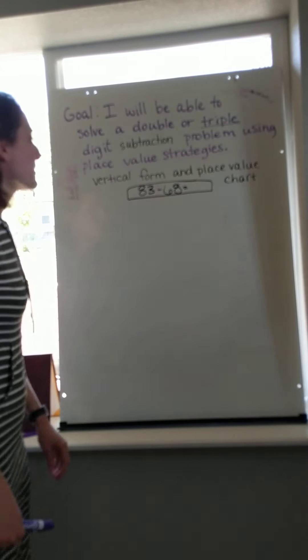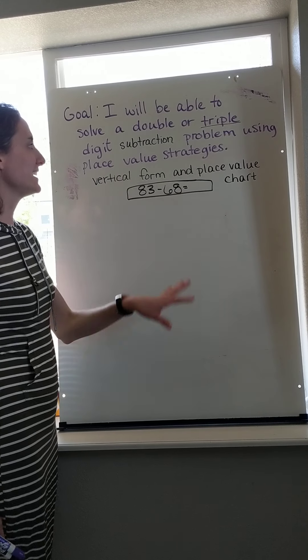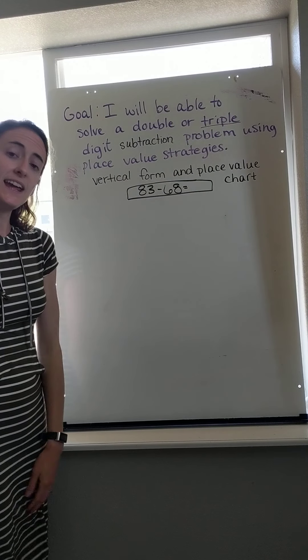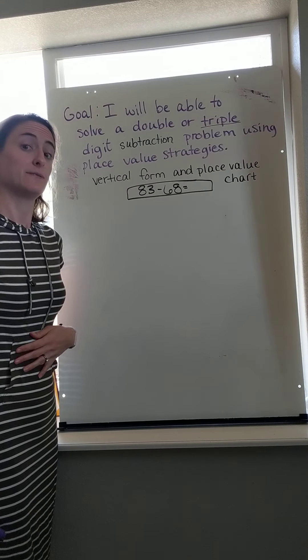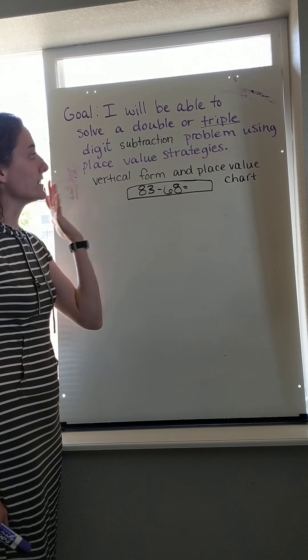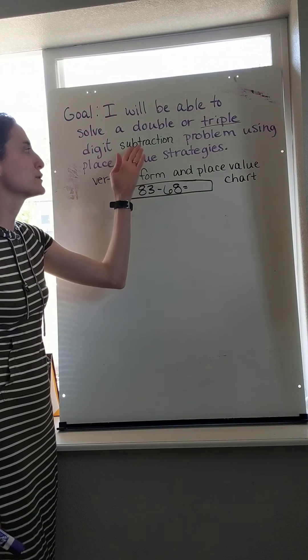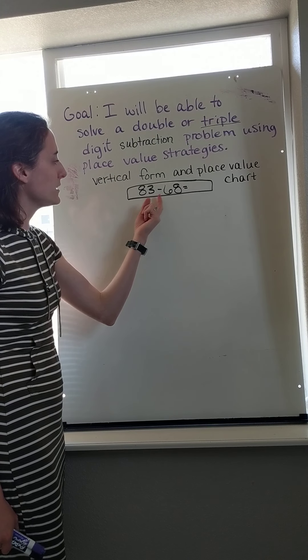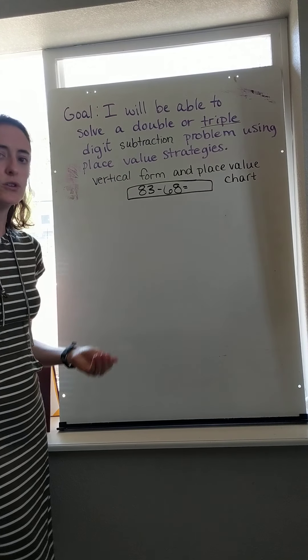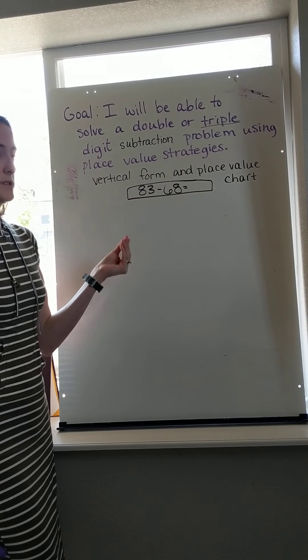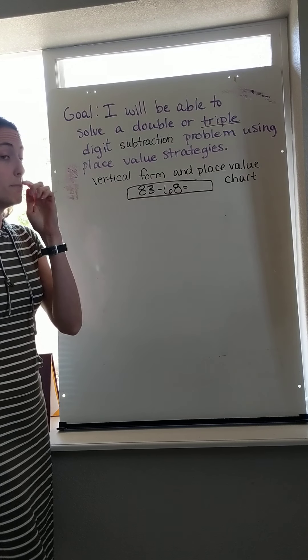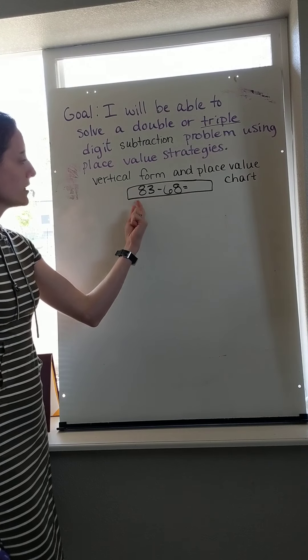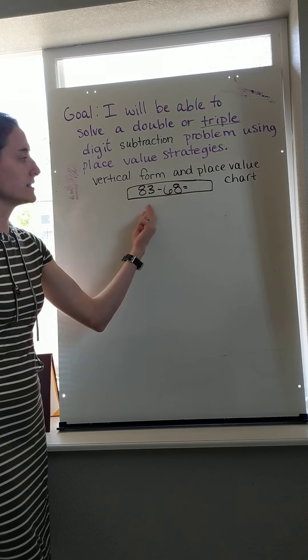Hi scholars, good morning. We are going to be tackling something a little bit different today, but you definitely have tried it within the past two weeks. We were working on using place value strategies to solve subtraction equations. Your assignment is going to look like 83 minus 68, something like that where you have a double digit problem or a triple digit problem. We'll try both today, but your numbers will be lined up horizontally side to side.